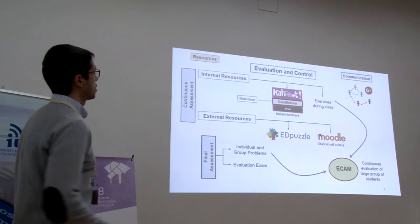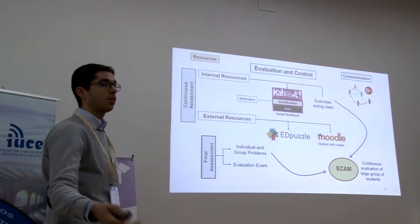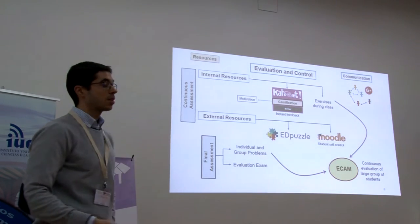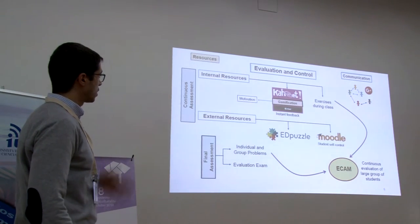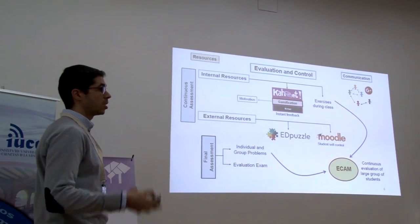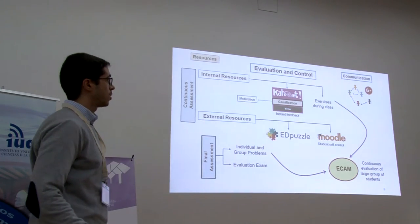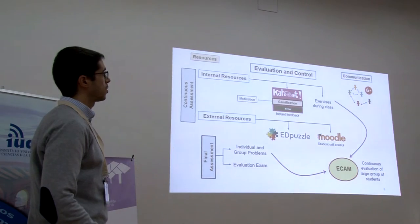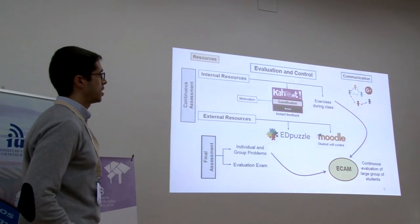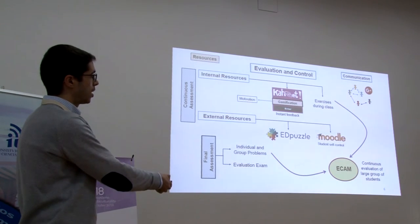The internal resources, which provide instant feedback from the classroom, are acute questions — already explained in a previous presentation here — to motivate students. We also use traditional exercises. As external resources, we have used EdPuzzle, which is very useful for making videos and inserting different questions along the videos. And of course, we use the Moodle platform. We have tried to improve communication between all layers using Google+, a free social network that is easy to use.